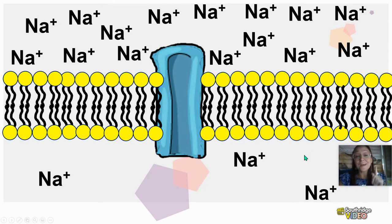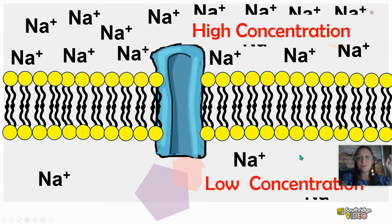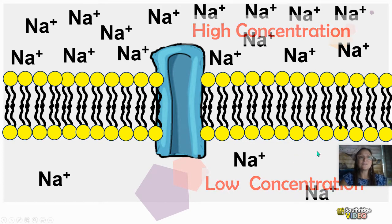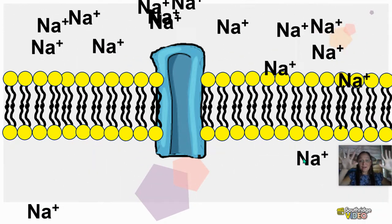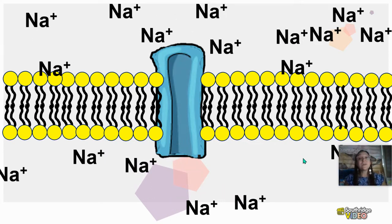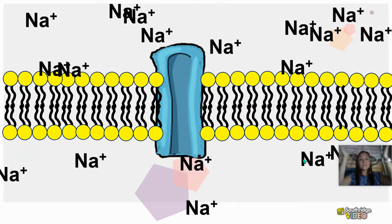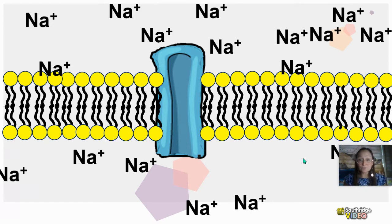Pay attention to the sodium in this animation. In the middle of the membrane we have a protein channel. Within our cell membranes, proteins have a number of functions — they could be receptors, enzymes, or used for identification along with carbohydrates. Here we have a protein channel. On the outside of the cell there is a high concentration of sodium, and on the inside a low concentration. Notice how sodium does not go by simple diffusion through the lipid bilayer. The only way it can get to the other side is through that protein channel, moving from high to low concentration.